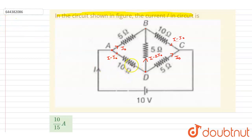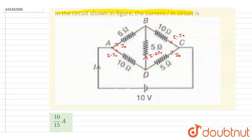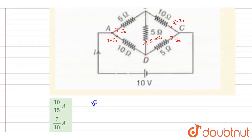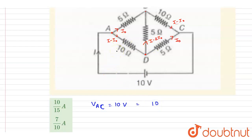Now we can apply Kirchhoff's loop law for any two loops. The potential difference between A and C is 10 volts. The current through the 10-ohm resistor is as marked. We are moving opposite to the direction of current, from C to A, so we gain a potential of 10 volts.